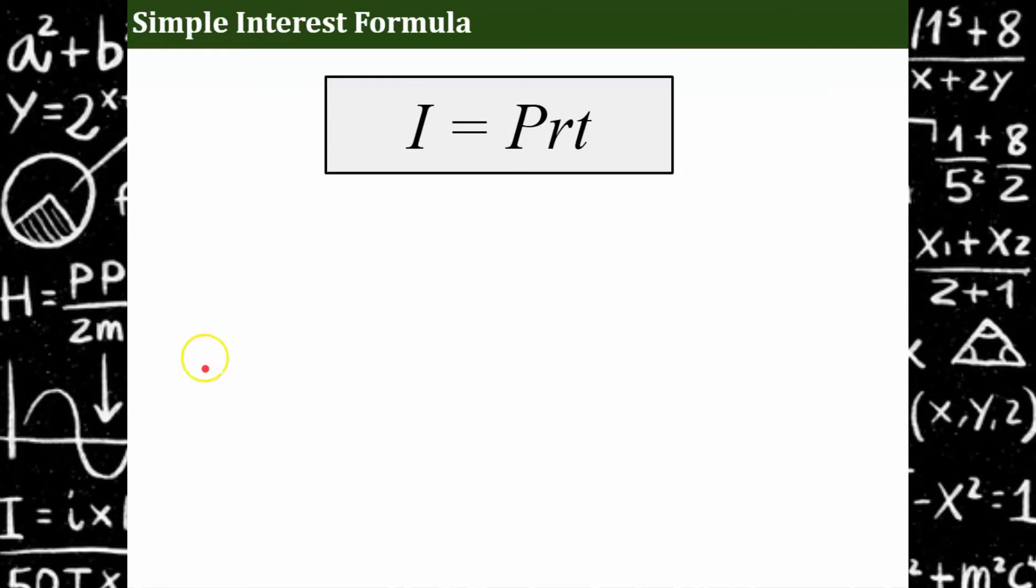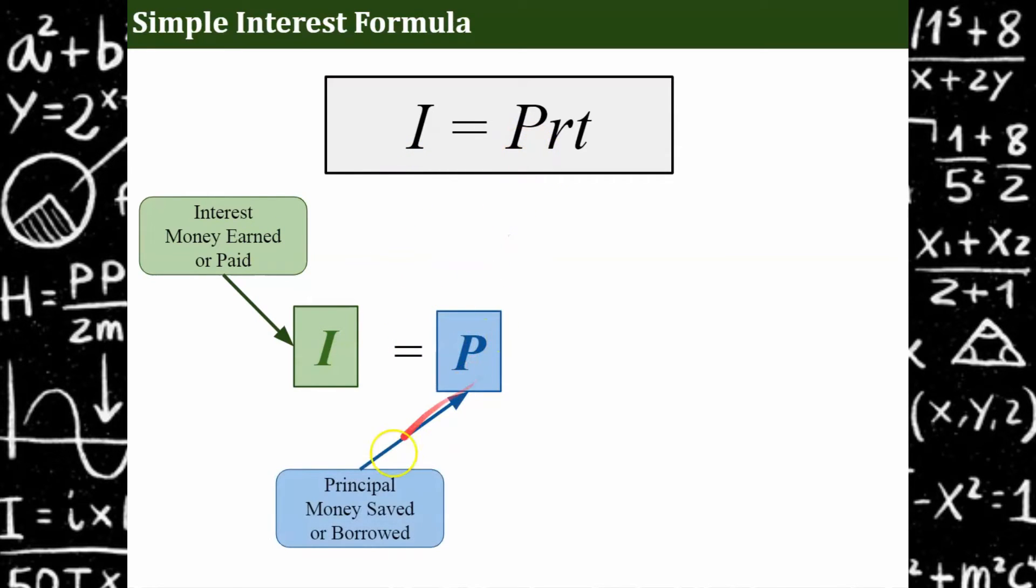So here's our simple interest formula. And we're going to talk about all the pieces. So the first thing we have is interest, that money earned or paid. That's our I. And that is equal to the amount of principle. That's the money that we've either saved or borrowed, multiplied by the rate, this annual interest rate. And remember, when we use a percent in a formula or an equation, we're going to write it as a decimal. So that's key that you've been given that percentage of rate, and we're going to convert it to a decimal in the formula.